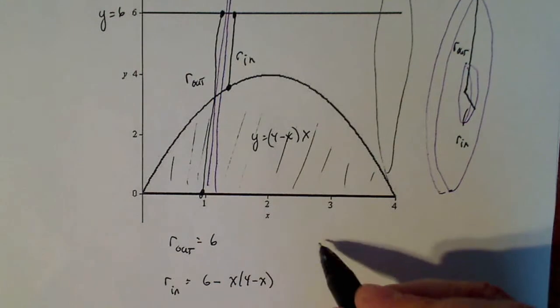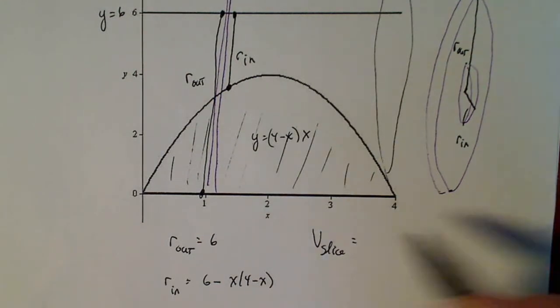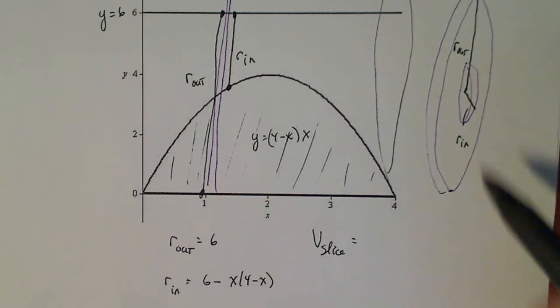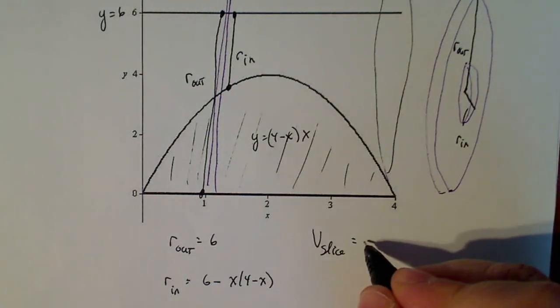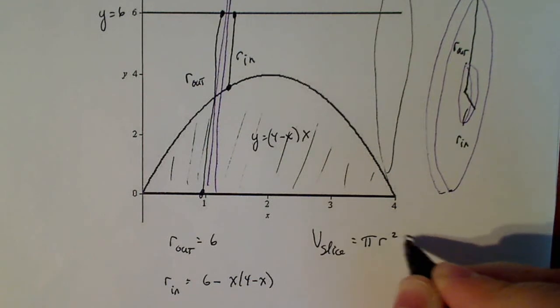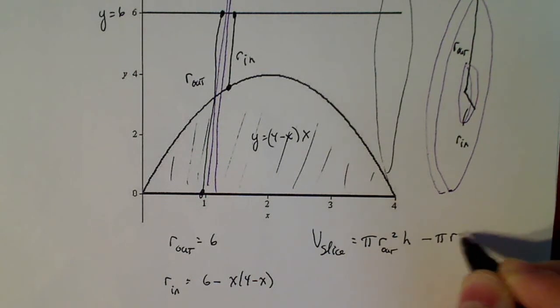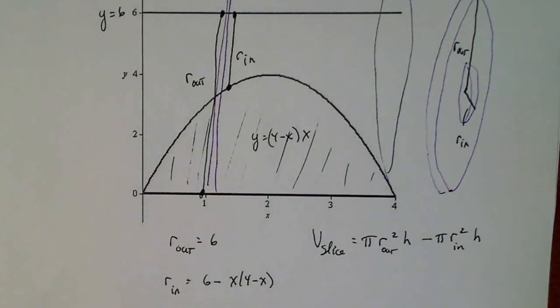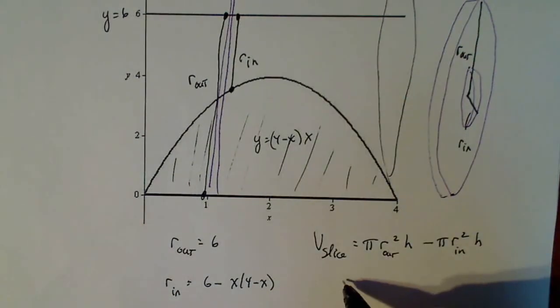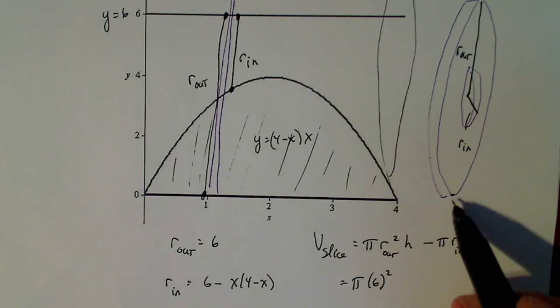Now, if I want to do the volume of my slice, it's the idea that this is a real thin cylinder and the thin cylinder has a volume of πr²h. But this is going to be the outside radius minus πr²h for the inside radius. If I just do my substitution, π times 6². And now h isn't the thickness though.